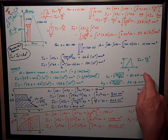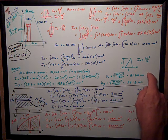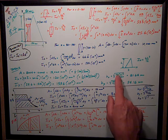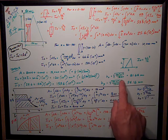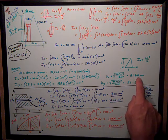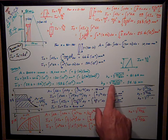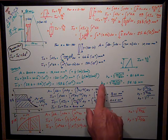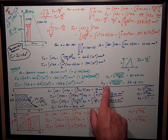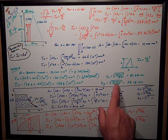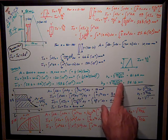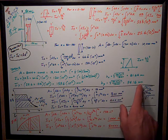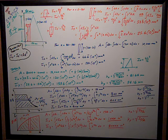The radii of gyration: Kx = √(Ix/A) = 81.64 mm. Ky, the radius of gyration about the y-axis, is √(Iy/A) = √(159.6 × 10⁶ / 18,000) = 94.16 mm.